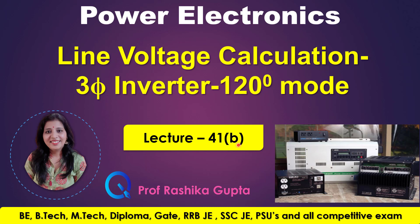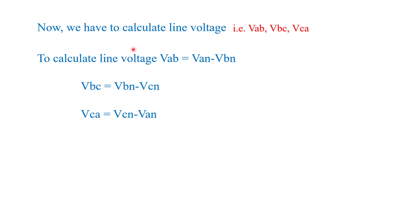Let's start with the topic. Here we calculate the line voltage for a 3-phase inverter in 120-degree conduction mode. We know that line voltage is calculated with the help of phase voltage. In my previous video, I have already explained the calculation of phase voltage — that is lecture number 41A. Please refer to that video if you want to understand how phase voltage is calculated.